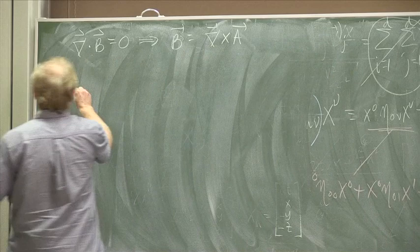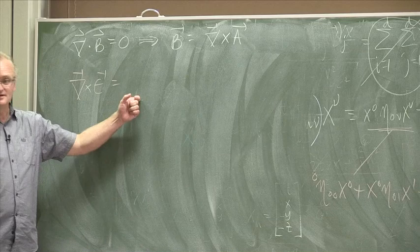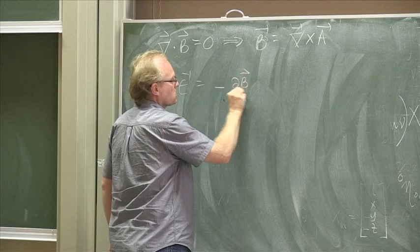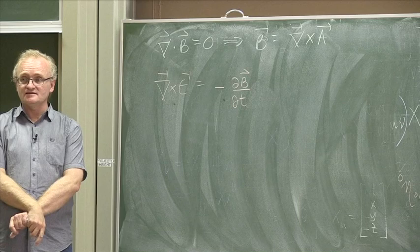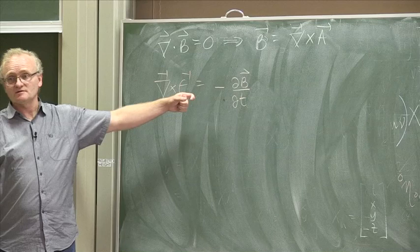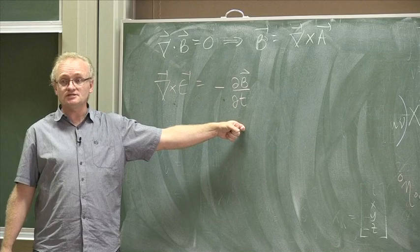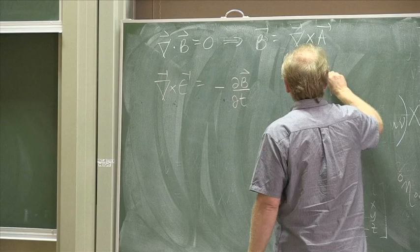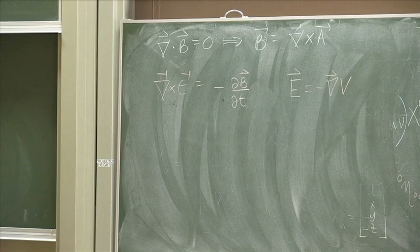Before we had the curl of E equal to zero, but is the curl of E equal to zero in one of Maxwell's equations? No. So if we write E as minus the gradient of a potential, this equation will not work, because one side will be zero but the other side won't. So we're going to have to change our equation.